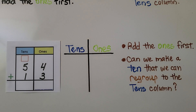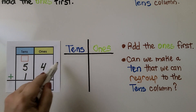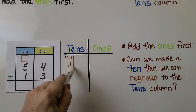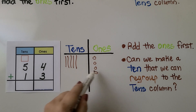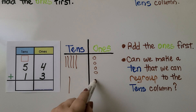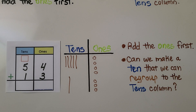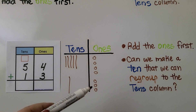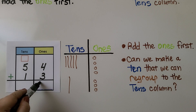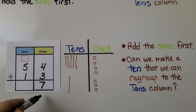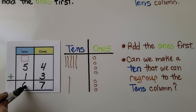Let's try it again with 54 plus 13. We make five tens for the 54 and four ones. For thirteen, we have one ten and three ones. We add the ones first: four, five, six, seven ones — we don't have enough to regroup this time. Four plus three equals seven. Then we add the tens: five plus one is six. Fifty-four plus thirteen is equal to sixty-seven.